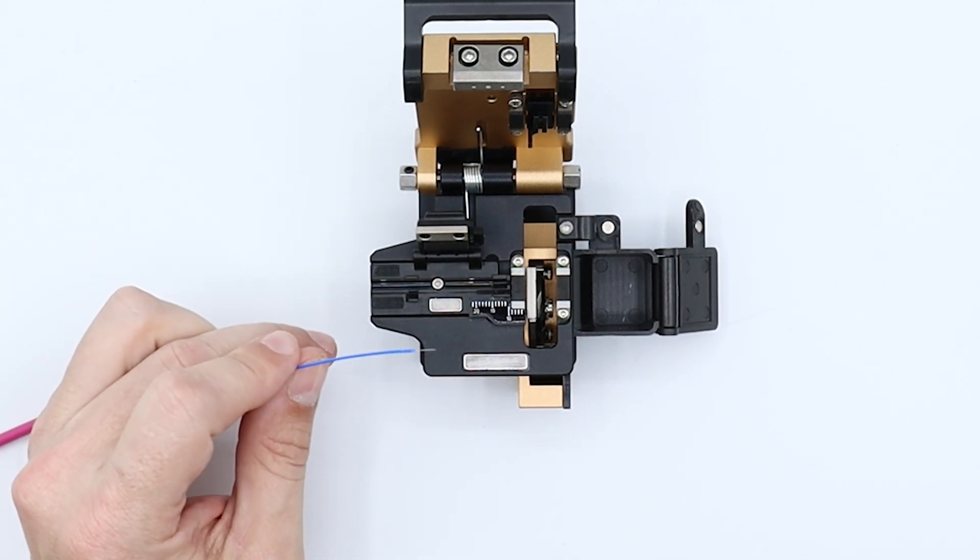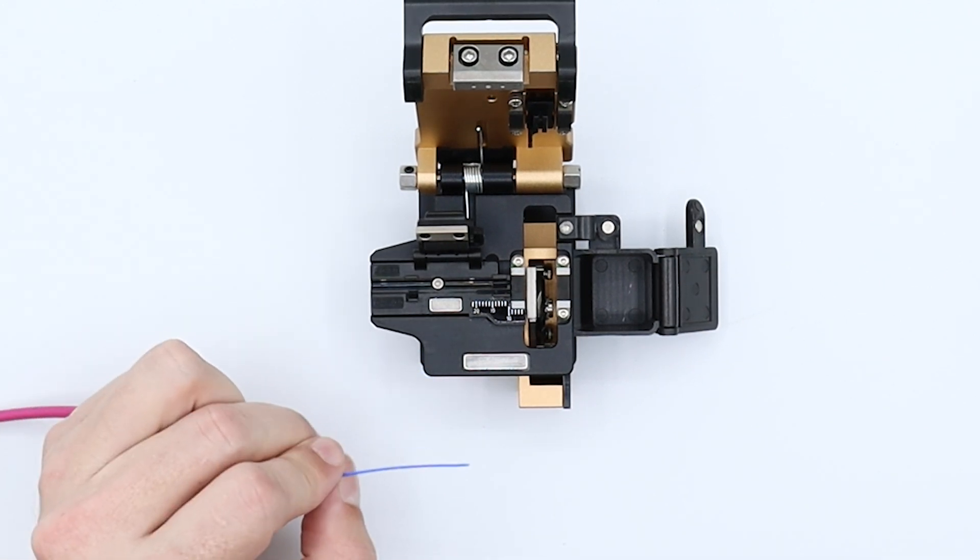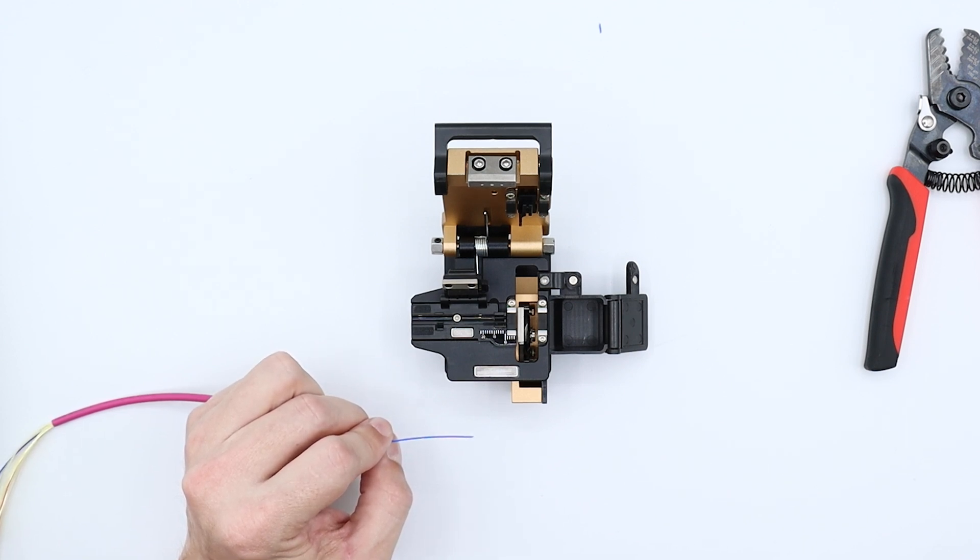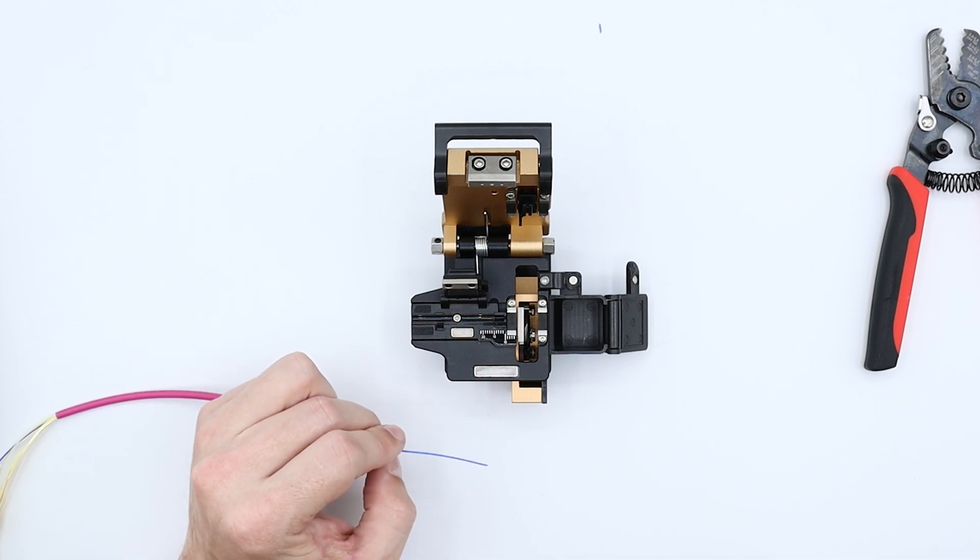Now again, don't want to mess with it too much here. It'll be ready to either slide into the fiber optic connector or the splicing machine. Again, it's very important that you clean this fiber before you cleave it and not after, because once you've cleaved it and you try and clean it after, then you're going to introduce perhaps dirt and dust onto the fiber optic cable and that could be a problem. So make sure you clean it before.